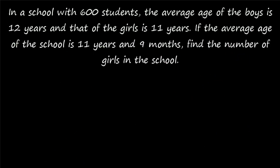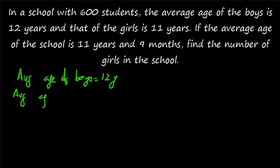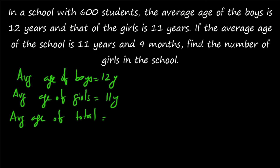One more question: in a school with 600 students, the average age of the boys is 12 years and that of the girls is 11 years. If the average age of the school is 11 years and 9 months, find the number of girls in the school. The average age of boys is 12 years, the average age of girls is 11 years, and the average age of the total school is 11 years and 9 months — that means 11 and 3/4 years. You have to find out the number of girls in the school.